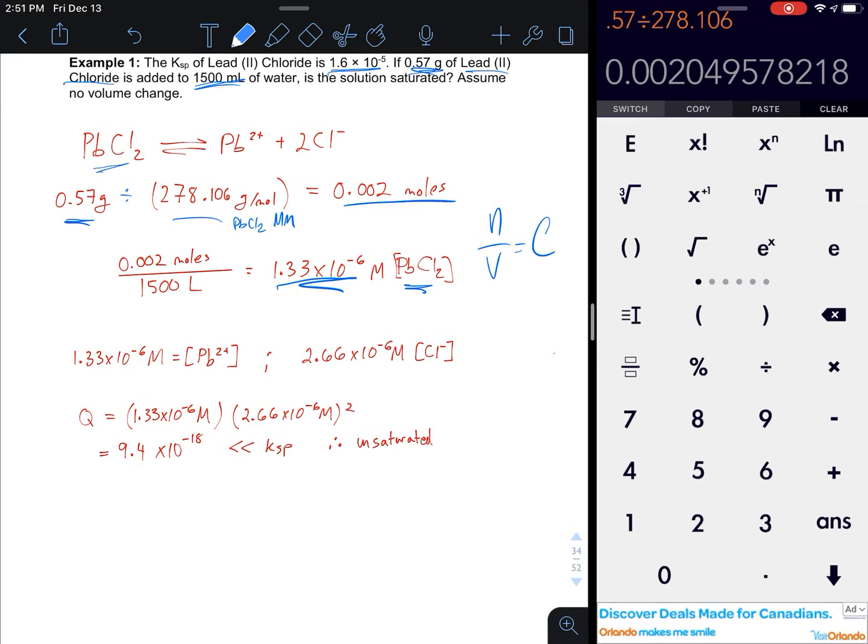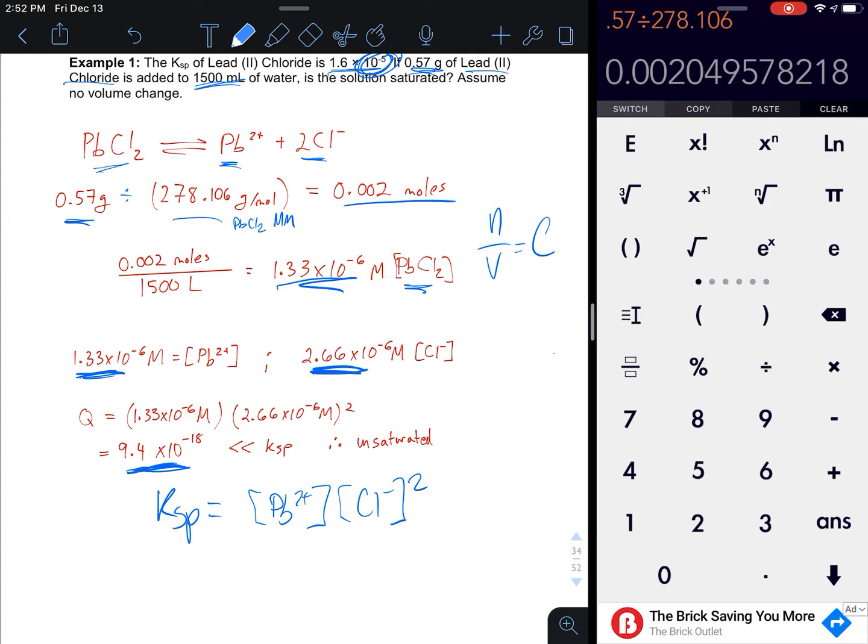We get 1.83 × 10⁻⁶ M PbCl₂. From our equation, the concentration of Pb²⁺ is 1.83 × 10⁻⁶ M, and we get twice that for Cl⁻, which is 3.66 × 10⁻⁶ M. Pump those into the equation: Q = [Pb²⁺][Cl⁻]² and we find a value of 10⁻¹⁸. Comparing to Ksp of 10⁻⁵, negative 18 is much smaller than negative 5, so it is unsaturated.